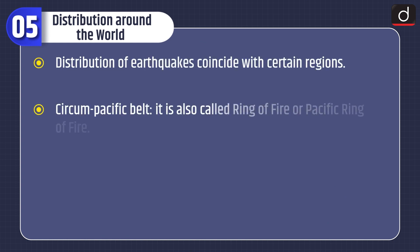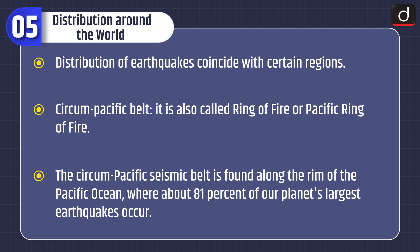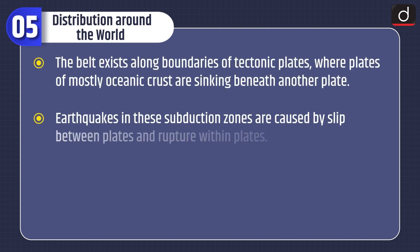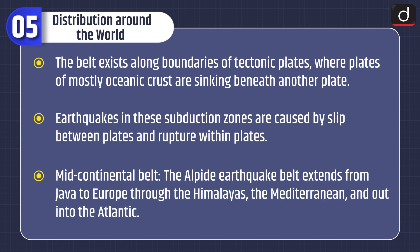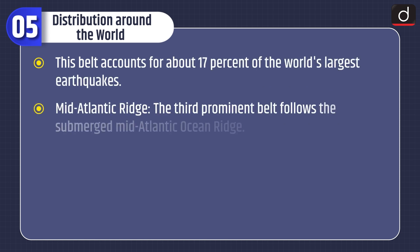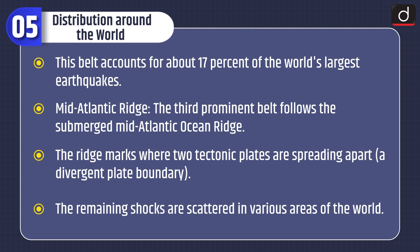Let's discuss about distribution around the world. Distribution of earthquakes coincides with certain regions. The Circumpacific belt, also called the Ring of Fire or Pacific Ring of Fire, is found along the rim of the Pacific Ocean where about 81% of our planet's largest earthquakes occur. It exists along boundaries of tectonic plates where oceanic crust sinks beneath another plate, causing earthquakes from slip between plates and rupture within plates. The mid-continental belt, or Alpide earthquake belt, extends from Java to Europe through the Himalayas, the Mediterranean, and out into the Atlantic, accounting for about 17% of the world's largest earthquakes. The third belt follows the submerged Mid-Atlantic Ocean Ridge, marking where two tectonic plates are spreading apart at a divergent plate boundary. The remaining shocks are scattered in various areas of the world.